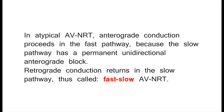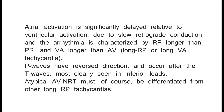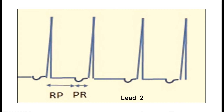Atypical AVNRT: in atypical AVNRT, anterograde conduction proceeds in the fast pathway because the slow pathway has a permanent unidirectional anterograde block, while retrograde conduction returns in the slow pathway — thus called fast-slow AVNRT. Atrial activation is significantly delayed relative to ventricular activation due to slow retrograde conduction, and the arrhythmia is characterized by RP longer than PR and VA longer than AV — long RP or long VA tachycardia. P-waves have reversed direction and occur after the T-waves, most clearly seen in inferior leads. Atypical AVNRT must be differentiated from other long RP tachycardias.